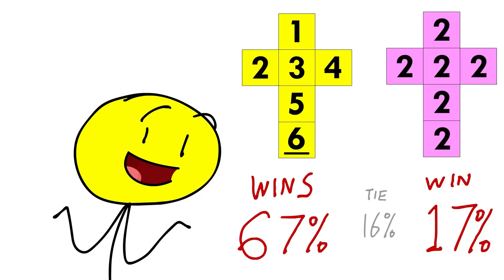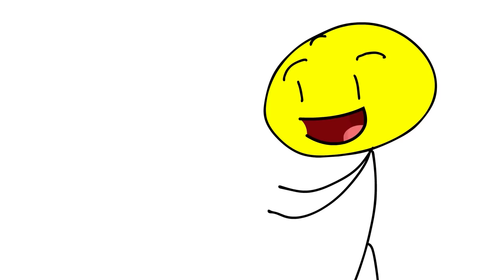So, since the Yellow die scores higher than the Pink die over 50% of the time, we'll say that Yellow beats Pink. Okay, that was the tutorial.